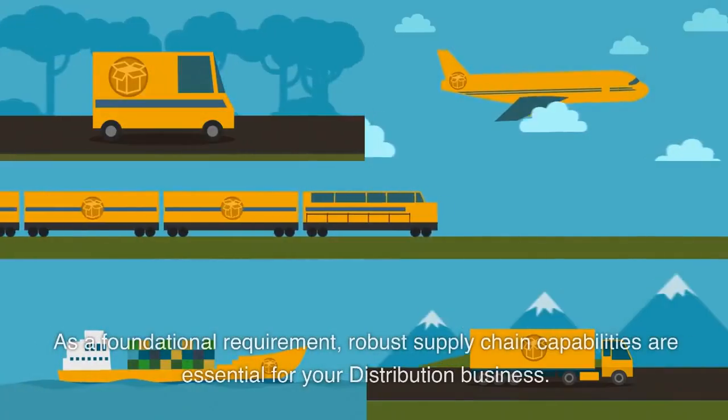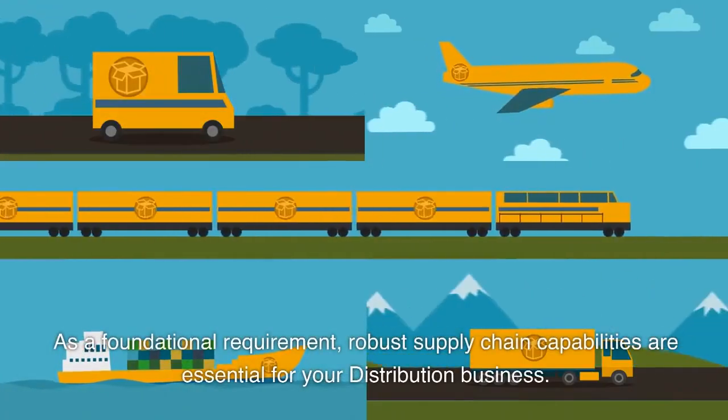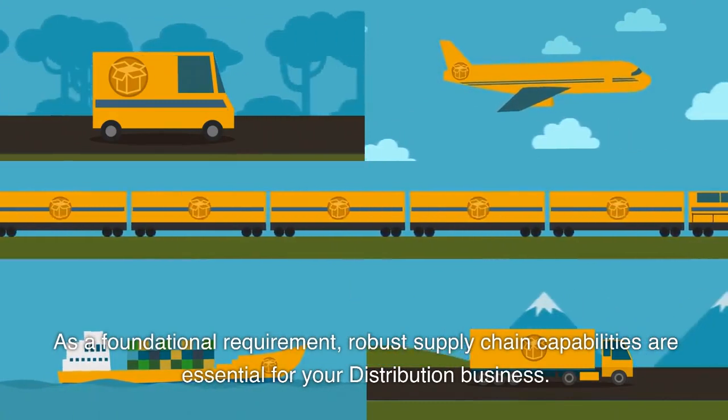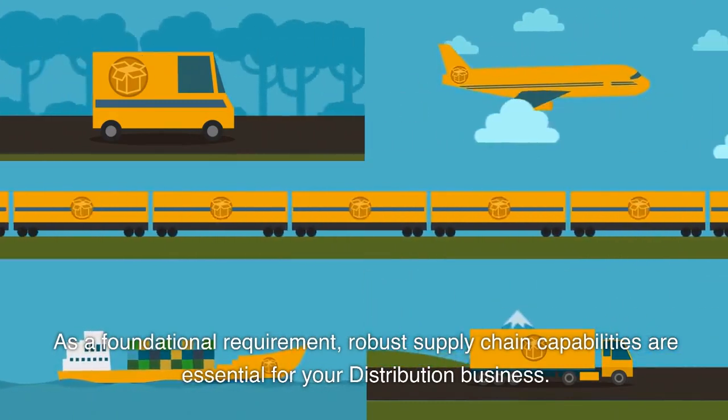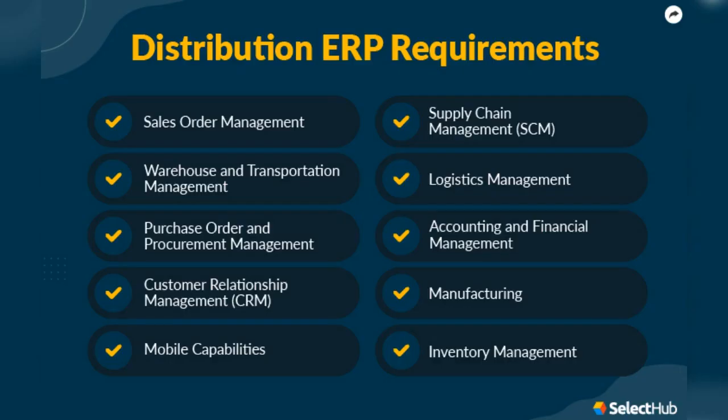As a foundational requirement, robust supply chain capabilities are essential for your distribution business. The software should offer end-to-end visibility from procurement to delivery, facilitating streamlined inventory management, order processing, and logistics coordination.